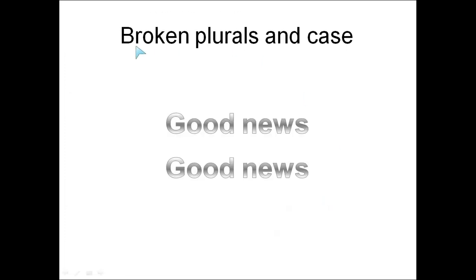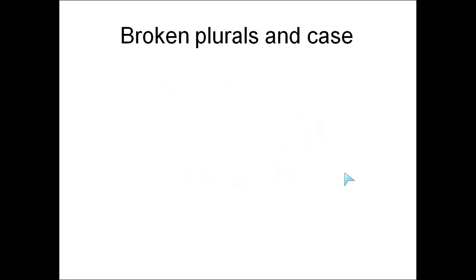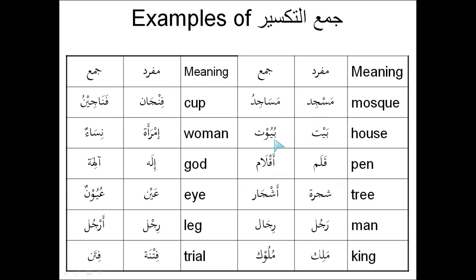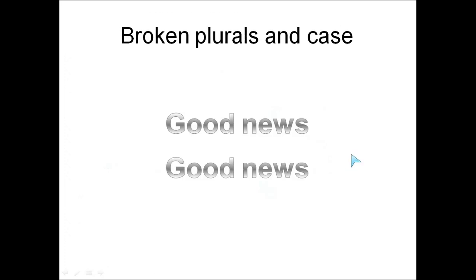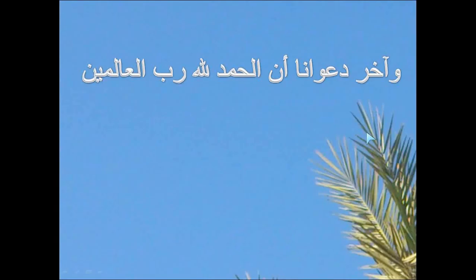So how do these broken plurals — Jam' at-Takseer — display their case, or hal, when they're marfu', mansub, or majrur? Well, it's all good news, because we've already covered this. They are either munsarif — for example, buyutun, aqlamun, ashjaarun, rijalun, mulukun — or they are mamnu' min as-Sarf — for example, masajidu and fanajinu. Using our mega acts table, which we've met in the previous video and which now has five rows, we can immediately tell what the final letter's vowel should be depending on its action in the sentence. That brings us to the end of this video. Alhamdulillahi rabbil 'alameen.